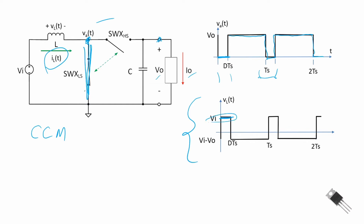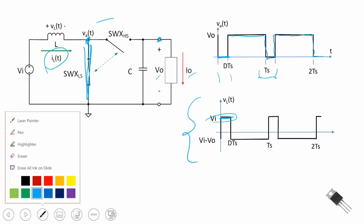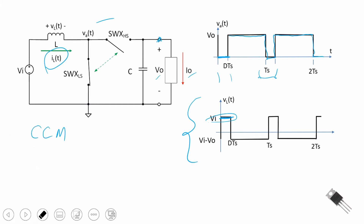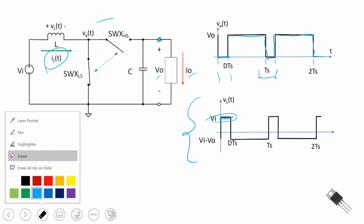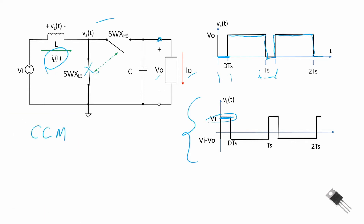When we open the low side switch and close the high side switch, the voltage across the inductor becomes the input voltage minus the output voltage. Recall that for a boost converter, the output voltage is greater than the input voltage, so this term V_i minus V_o will be less than zero. The average value of the voltage across the inductor must equal zero, so the area above the axis equals the area below the axis.